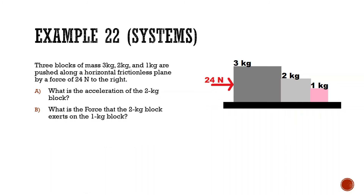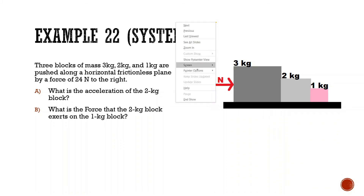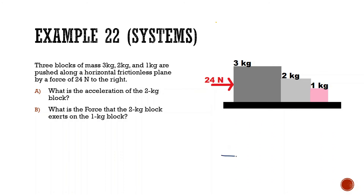We have three blocks of mass 3 kg, 2 kg, and 1 kg pushed along a horizontal plane by 24 newtons to the right — no friction. What is the acceleration? I highly suggest drawing a separate free body diagram for each object.